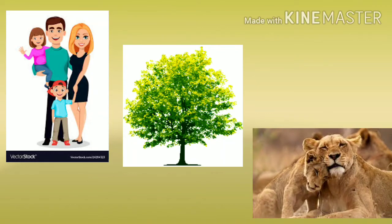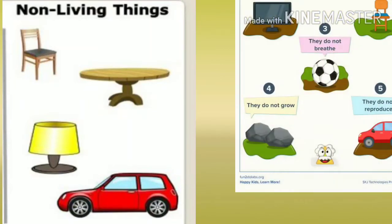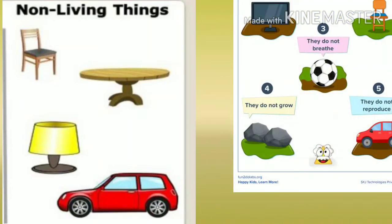But non-living things are just like a table, chair, lamp, car, etc. Because these things do not eat and drink, they do not move here and there, and they do not reproduce and grow.